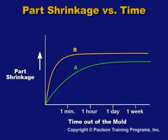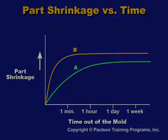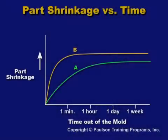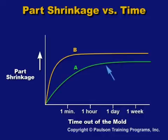This graph represents shrinkage versus time for a part cooled under different conditions. Part A was cooled quickly. A high level of molecular orientation was trapped in the part. The oriented molecules slowly and partially relaxed over a period of a day or two, perhaps longer. The extended time of relaxation caused the part to continue shrinking at a slow rate.